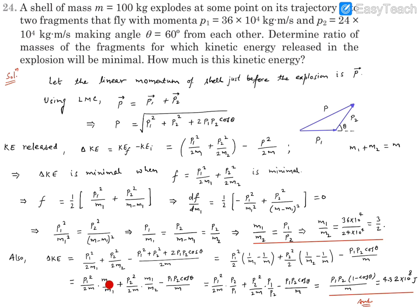Since M2/M1 = P2/P1 and M1/M2 = P1/P2 at the minimum, substituting: the P1² term becomes P1P2/(2M) and the P2² term also becomes P1P2/(2M). Together they give P1P2/M. Combined with -P1P2 cosθ/M, taking P1P2/M as common factor gives the final result: ΔKE = P1P2(1 - cosθ)/M. Substituting the known values of P1, P2, theta, and M gives the numerical answer.